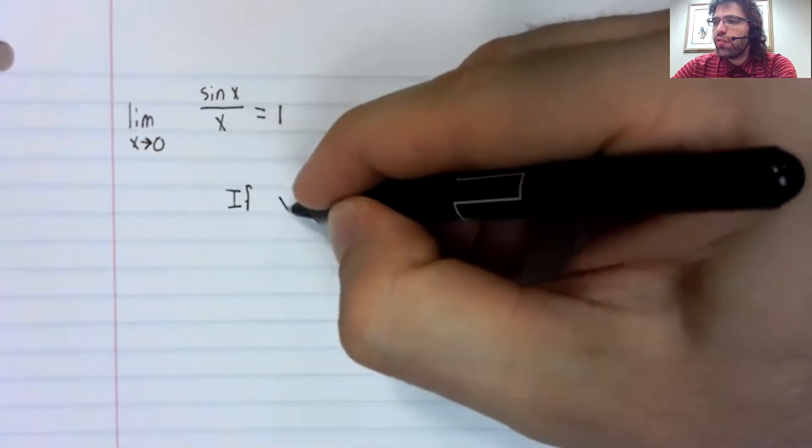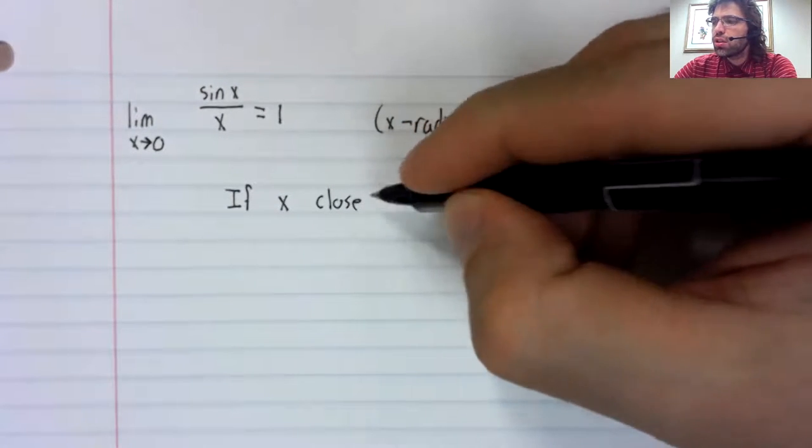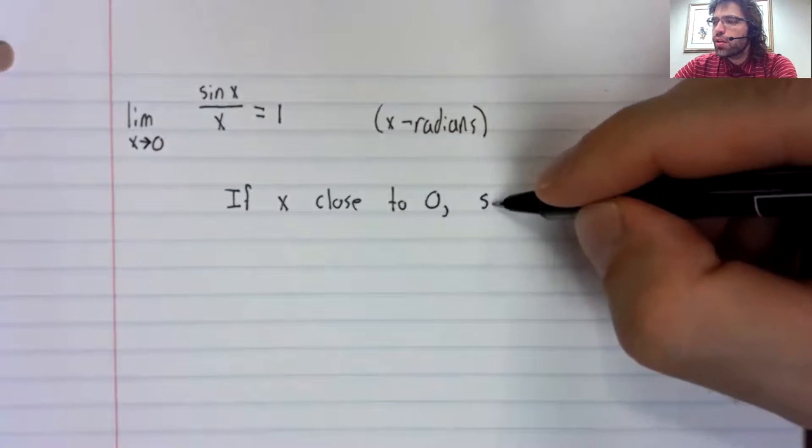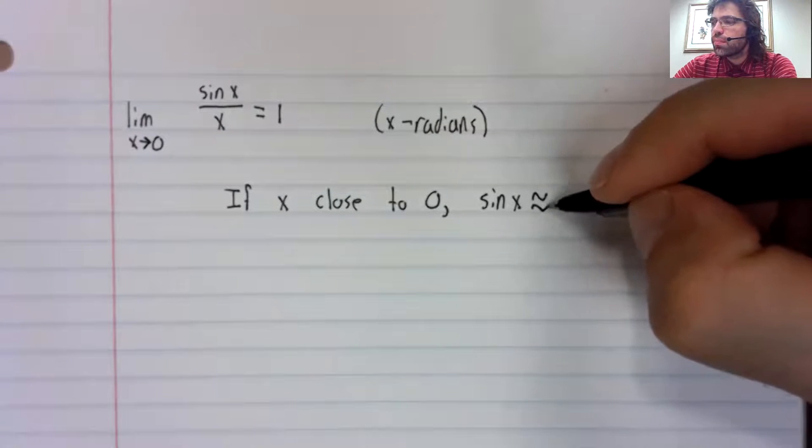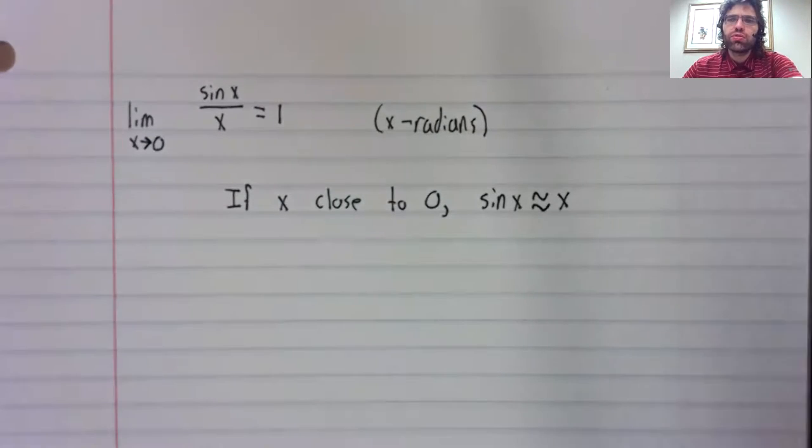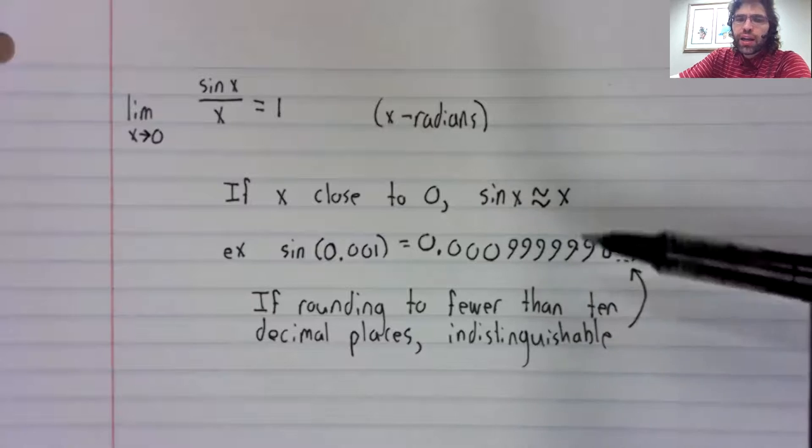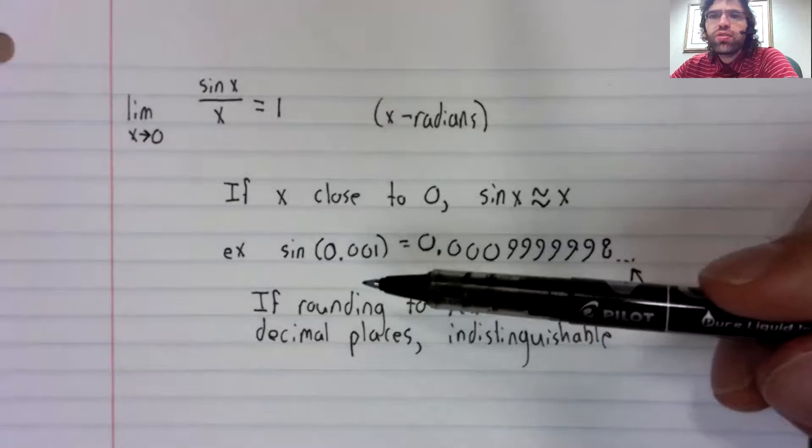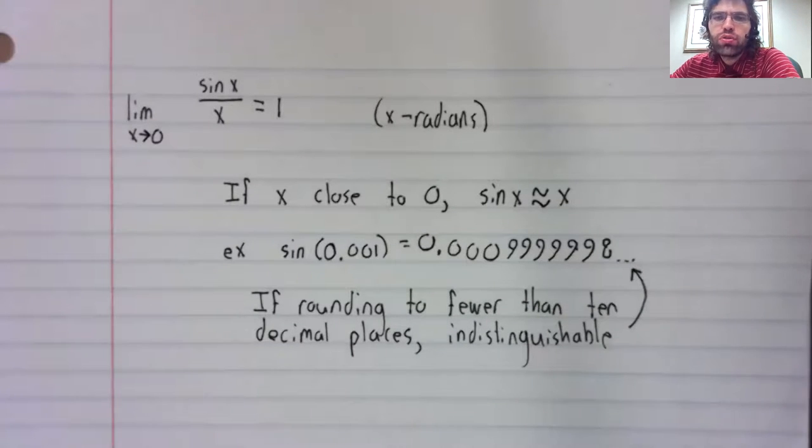So if x is close to zero, the sine of x is very close to x. So for example, sine of 0.001 is very close to just being 0.001.